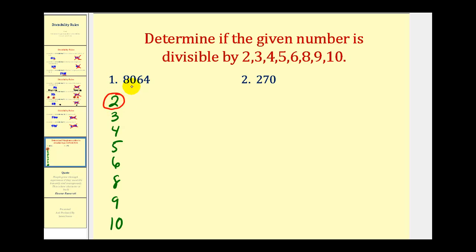To determine if it's divisible by 3, we sum the digits: 8 plus 0 plus 6 plus 4 gives us 18. Since 18 is divisible by 3, so is the given number. And remember, if a number is divisible by 2 and 3, it's also divisible by 6. To determine if it's divisible by 4, we look at the last two digits — 64 — and since 64 is divisible by 4, so is the given number.